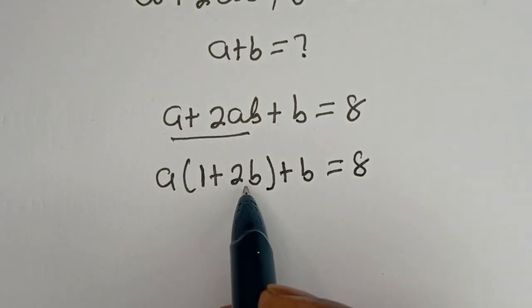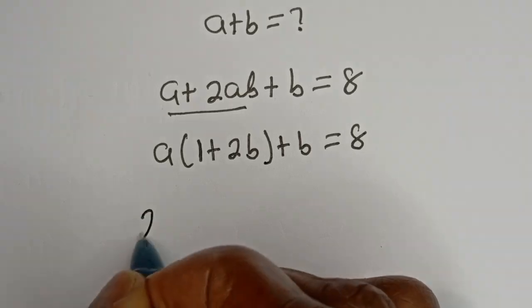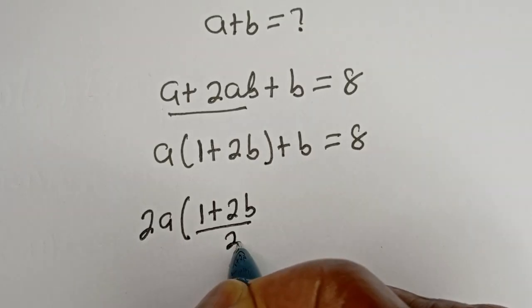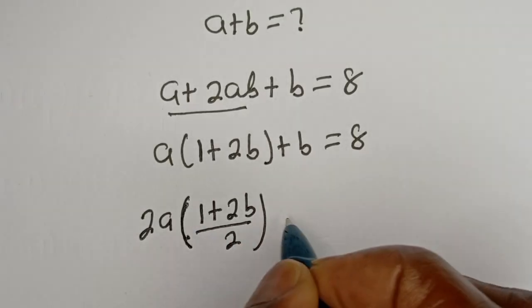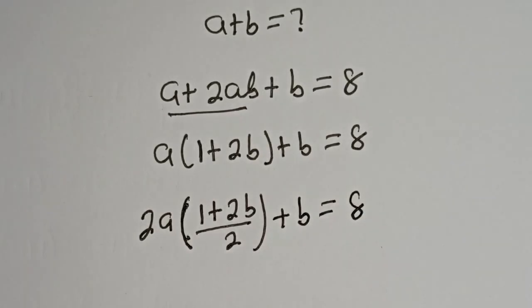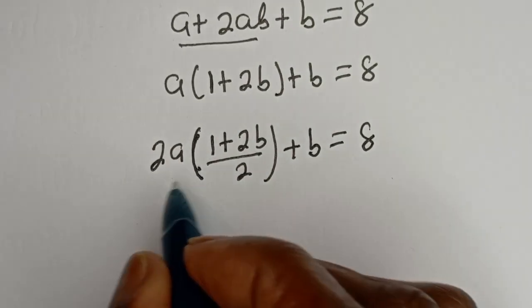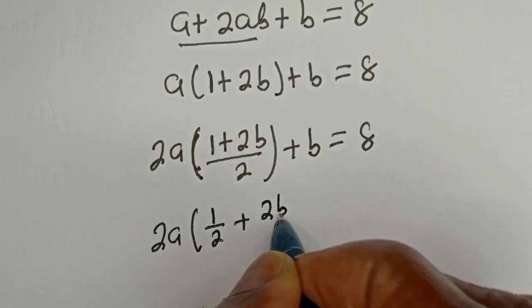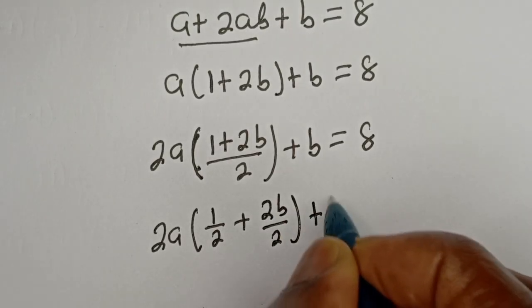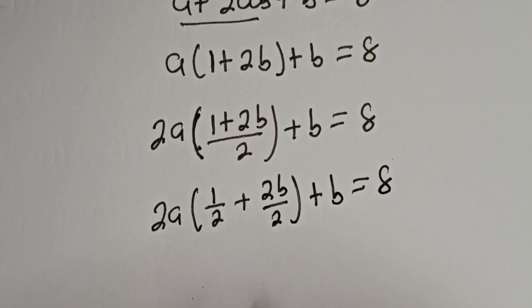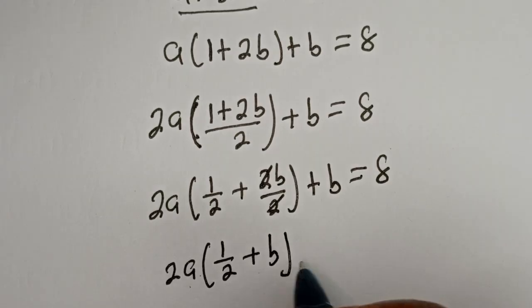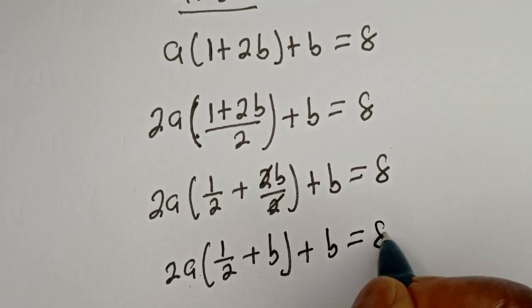Let's multiply this by 2 and also divide it by 2. We have 2a bracket 1 plus 2ab divided by 2 plus b is equal to 8. This can be written as 2a bracket 1 divided by 2 plus 2ab divided by 2 plus b is equal to 8. We cancel the 2s, giving 2a bracket 1 divided by 2 plus b, plus b is equal to 8.